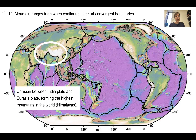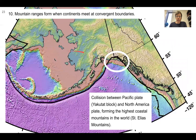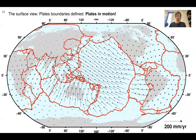Finally, also in the topography, we have mountain ranges that form when two continents meet at convergent boundaries. In these collision zones, the most famous one is the India plate meeting the Eurasia plate, forming the highest mountain range in the world — the Himalayas. Another example more locally is the collision between the Pacific plate and North American plate. The Yakutat block — basically part of the Pacific plate — is thick and crashing into North America, forming the highest coastal mountains in the world. This gives us the surface view of plate boundaries defined and plates in motion — the final picture of all this evidence put together.